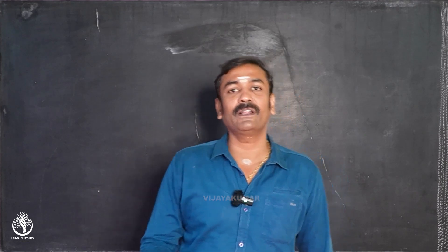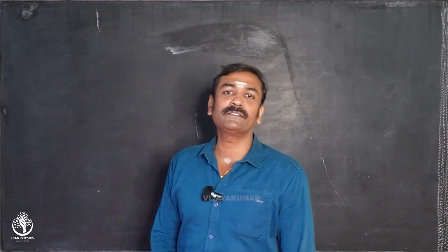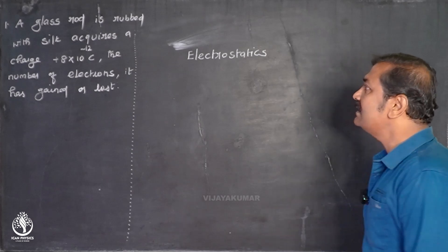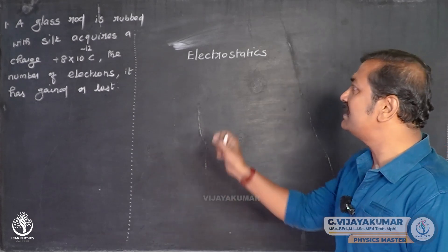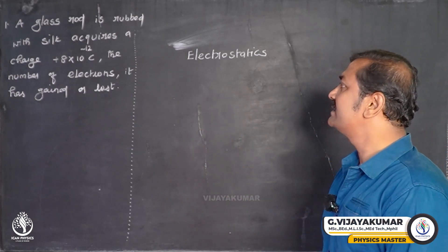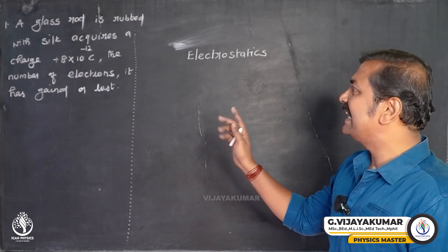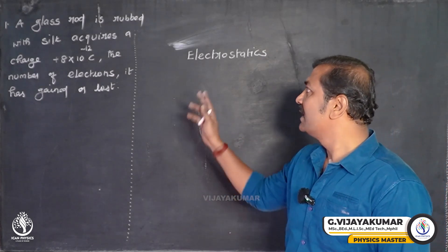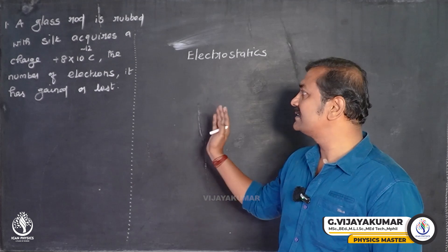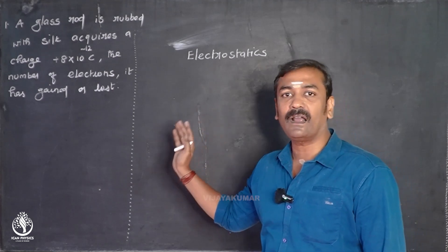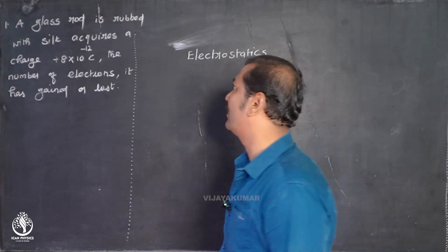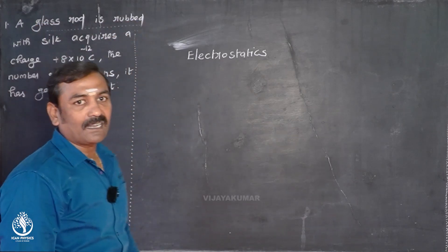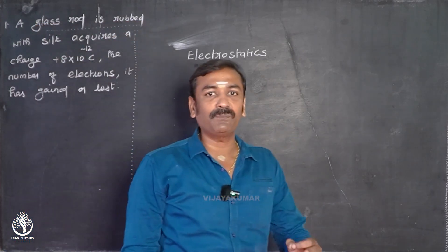Welcome back to the video classes. We are going to see about electrostatics. A glass rod is rubbed with silk and acquires a charge of plus 8 into 10 to the power minus 12 coulombs. The question is: what is the number of electrons it has gained or lost?